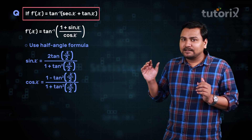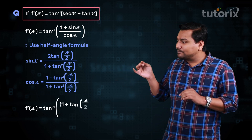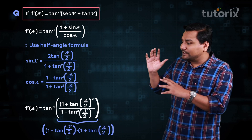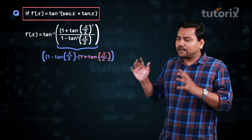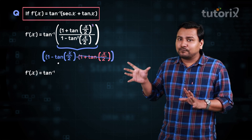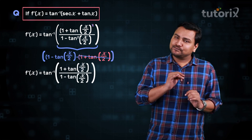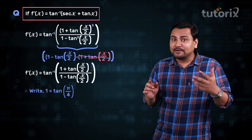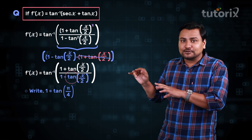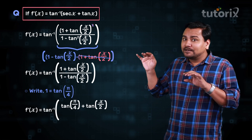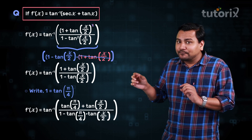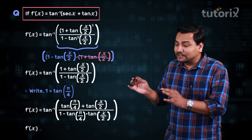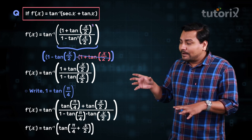Substituting and rearranging, f'(x) becomes tan inverse of (1 plus tan(x/2))² by (1 minus tan²(x/2)). From the numerator and denominator we can cancel out (1 plus tan(x/2)), giving f'(x) equal to tan inverse of (1 plus tan(x/2)) by (1 minus tan(x/2)). Now we can write 1 in the numerator as tan(π/4), so this becomes tan(π/4 plus x/2) by the tangent addition formula, giving f'(x) = tan inverse of tan(π/4 plus x/2).